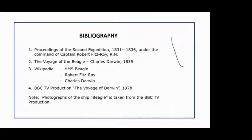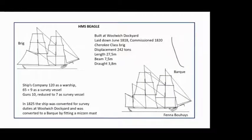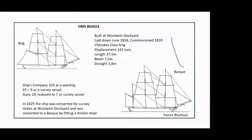Where I show photographs of the Beagle, they are taken from the BBC TV production. The Beagle was built at Woolwich Dockyard, laid down in 1818 and commissioned in 1820. It's a Cherokee class brig with a displacement of 242 tons, a length of 27.5 meters, a beam of 7.5 meters, and a draft of 3.8 meters. This is quite a small ship. The sketch at the left top shows it as a brig — a brig has two masts, a foremast and a main mast.